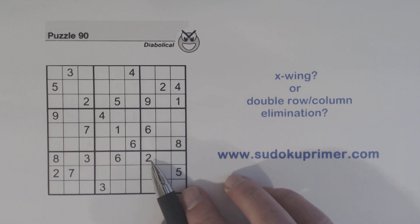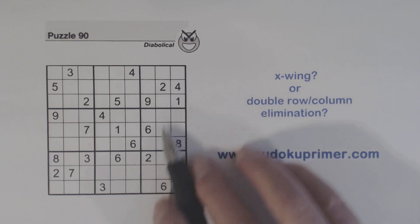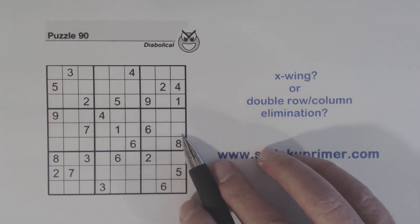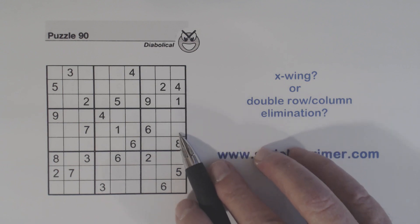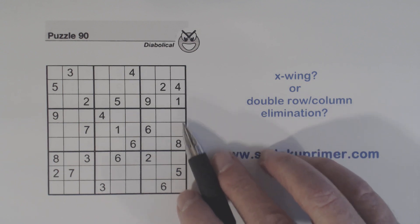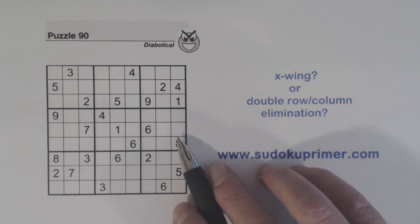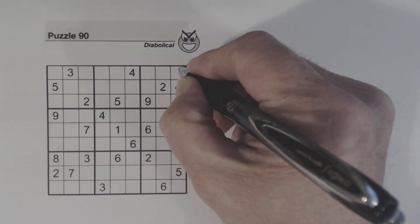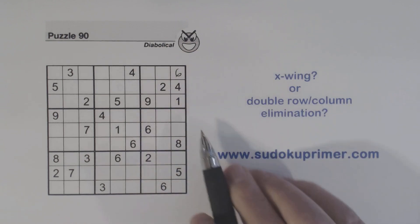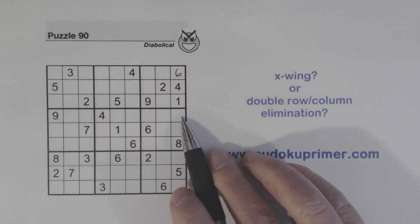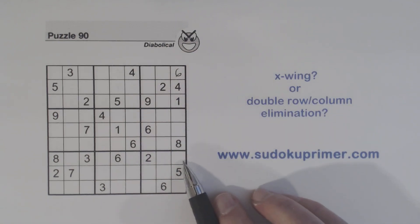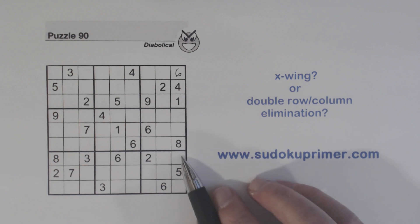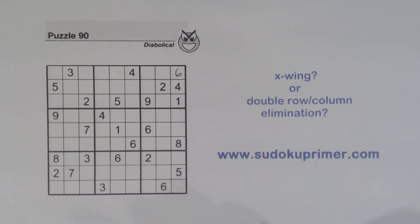Another thing I want to point out here: we have a 2 here and a 2 here, and we know the 3 is constrained to one of these two cells, so we have 2-3 twins here. We've also got a 6 here and 6 here, so that is a 6 right there. So we have 2-3 twins here and 7-9 twins here. We'll keep those in mind as we go.